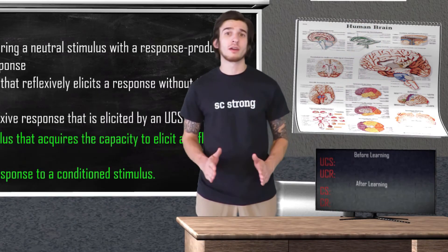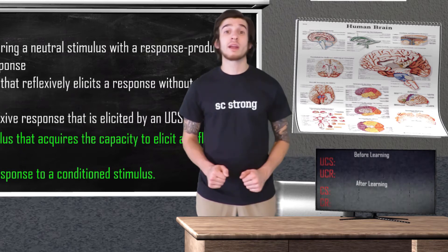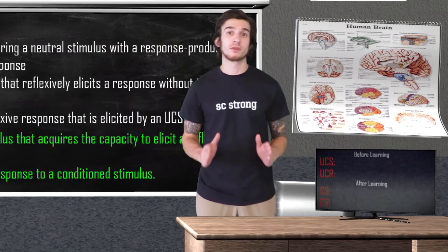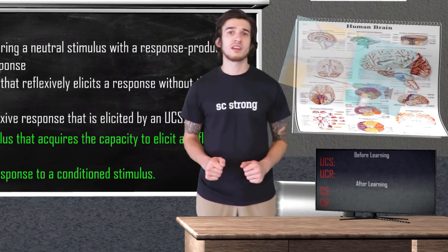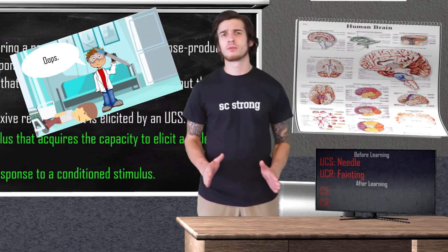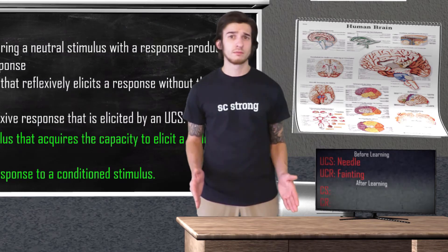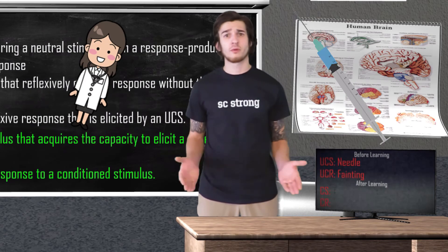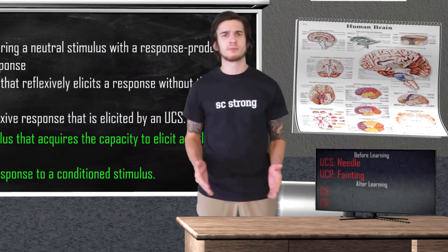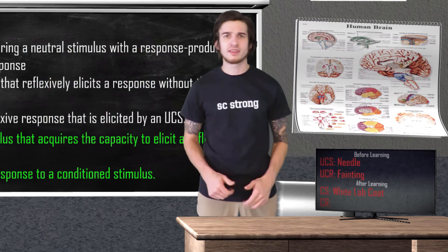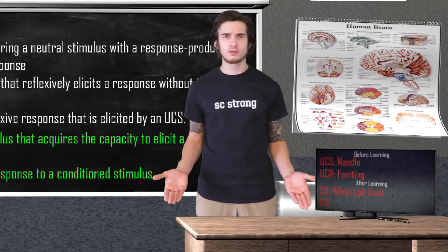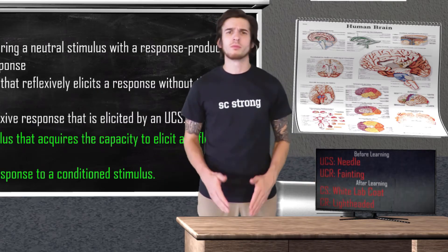Let's first identify our unconditioned stimulus and unconditioned response — this is what happens before learning occurs. When being administered the shot, Billy fainted. This is a reflexive response Billy has to the aversive stimulus of a needle, so our unconditioned stimulus is the needle and our unconditioned response is fainting. Now for the association: Billy is associating the white lab coat that the doctor wears with the needle. The next time Billy went to the doctor he started to feel lightheaded when he saw the lab coat. So our conditioned stimulus is the white lab coat, and our conditioned response is lightheadedness.